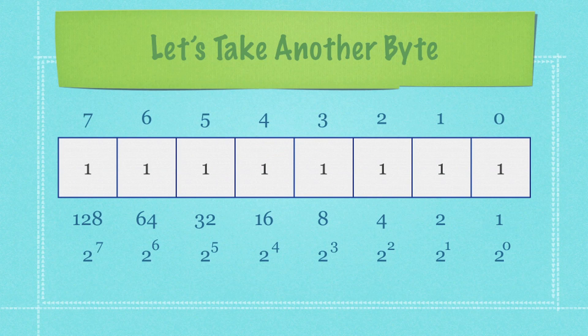Bytes, which we should get very comfortable with, are normally represented as 8 bits and can hold a maximum number of 255. If you add 128 plus 64 plus 32 plus 16 plus 8 plus 4 plus 2 plus 1, you get 255.